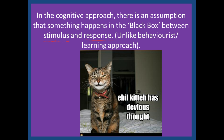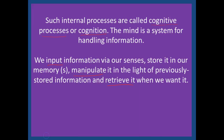In the cognitive approach, we do assume that there are cognitive processes happening in the black box. In the behaviourist or learning approach, they're only interested in the stimulus and response. Sometimes you can see people's cogs whirring as you look at them — these are called cognition or cognitive processes. In this approach, the mind is simply seen as a system for handling information.